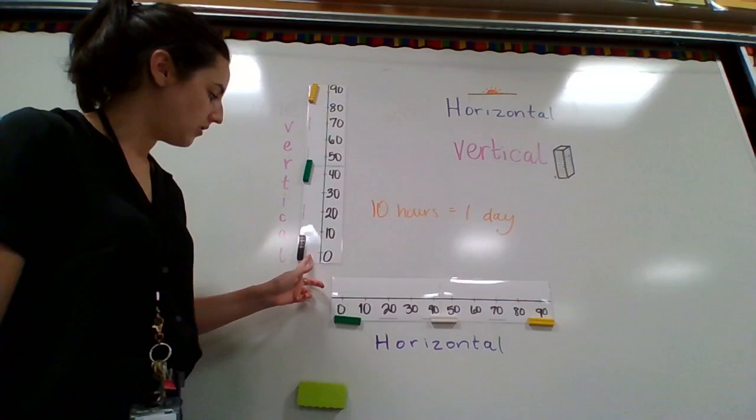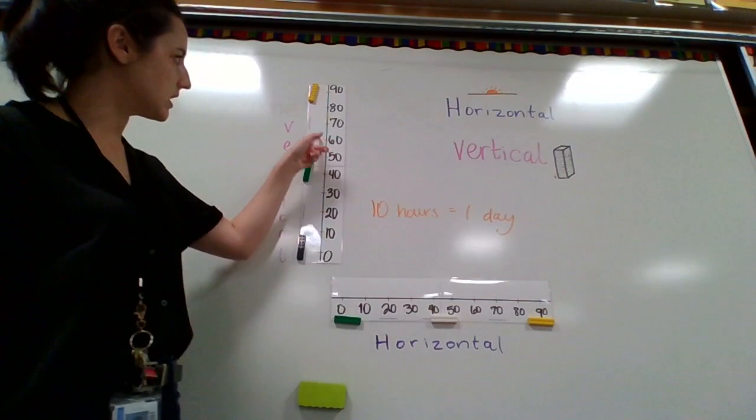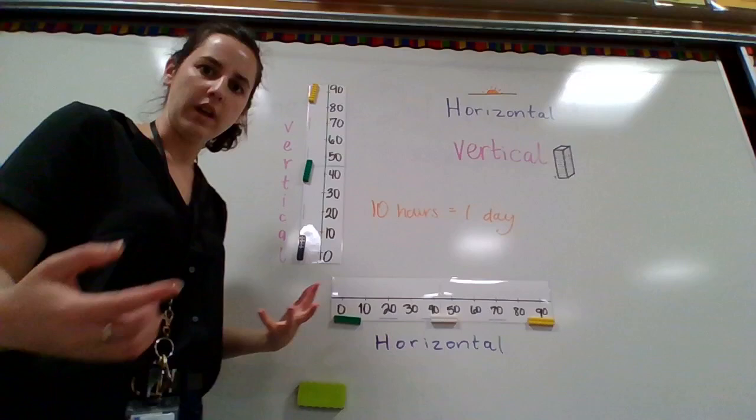This time we're going to go vertically, which means up and down. Ready? Zero, 10, 20, 30, 40, 50, 60, 70, 80, 90. Nice job.